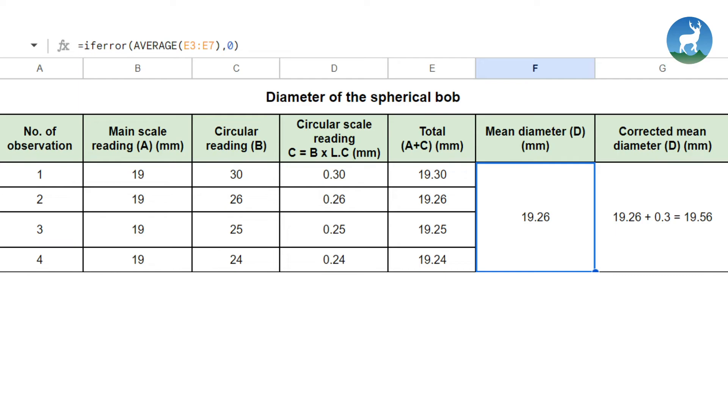The corrected mean diameter is mean diameter plus the negative zero error which is 19.56 mm. After the calculation, mean diameter is 19.26 mm or 1.93 centimeter.